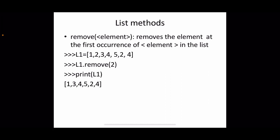The remove method removes an element by its value rather than its index: l.remove(element). It removes the first occurrence of that element in the list. For example, with l1 = [1, 2, 3, 4, 5, 2, 4], calling l1.remove(2) removes the first occurrence of 2. Since 2 appears at index 1 and index 5, only the first occurrence is removed, giving [1, 3, 4, 5, 2, 4]. Note that remove does not return a value.